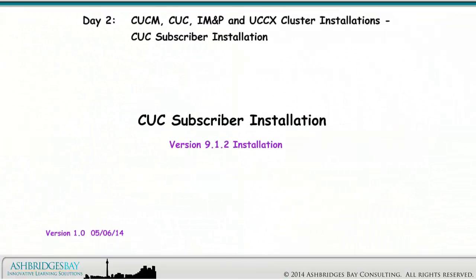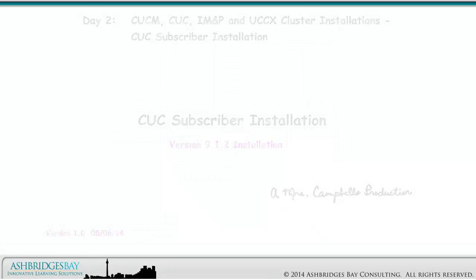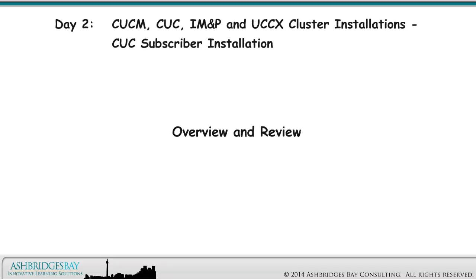This drawing describes how to install Cisco CUC 9.1.2 subscribers. This is the version that was packaged with RBE6000. Let's start with a quick overview and review.